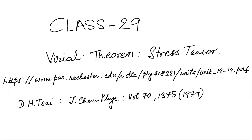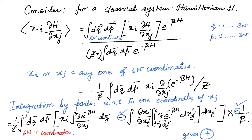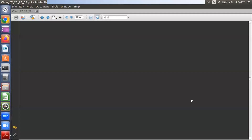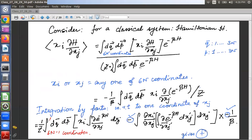Moreover, the extension from the Virial Theorem to the stress tensor is discussed well in G.H. Psi, 1979. But there is a small error — an error in terms of convention — that I shall point out when we discuss the topic. With that, what we are going to do is, for a classical system described by a Hamiltonian, we are necessarily discussing only those systems whose equations of motion can be written in terms of a Hamiltonian.